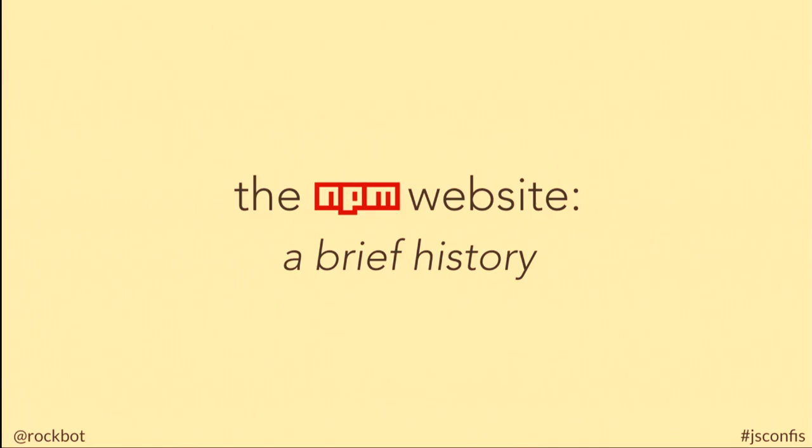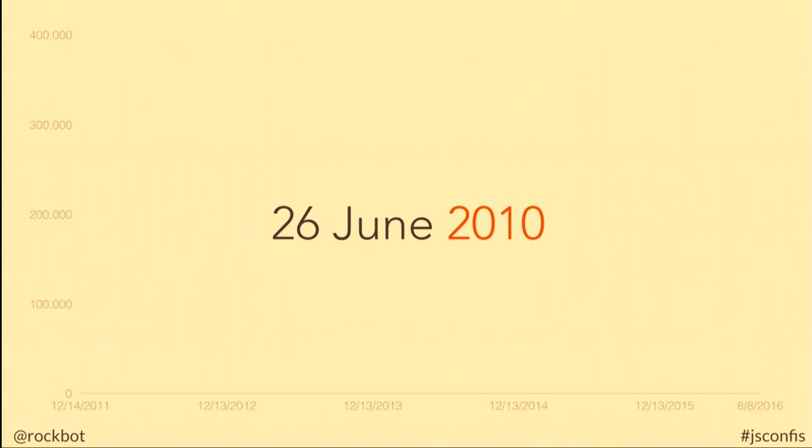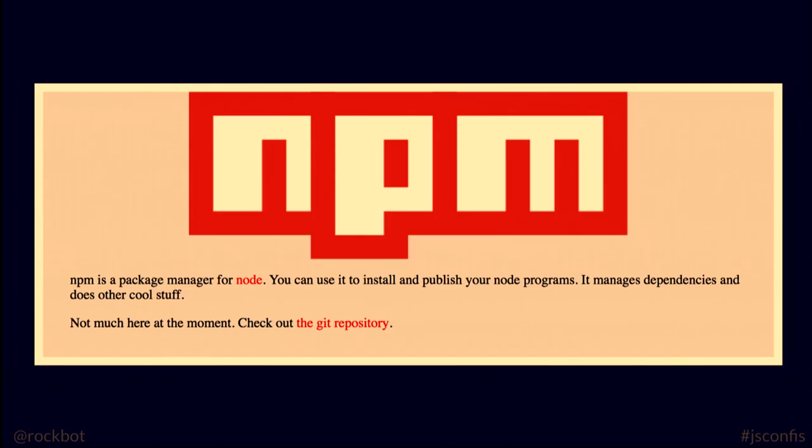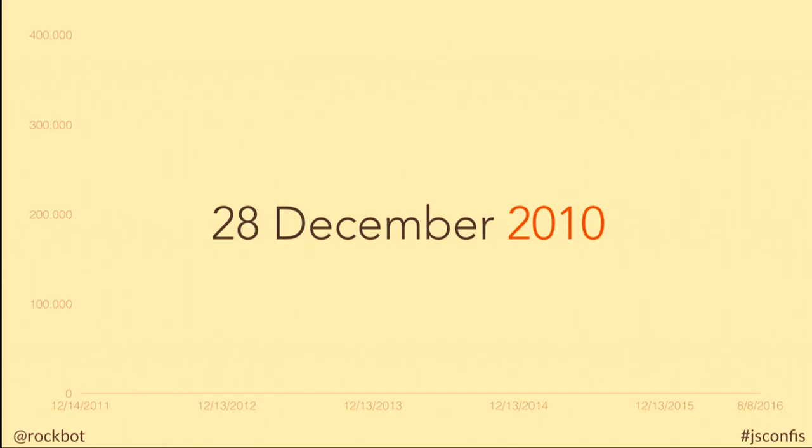Let's go a little bit back in time. The very first version of the NPM website is from June 2010, and here's what it looked like. It was just a little landing page — not much here. It's just like, hey, there's this thing called NPM, go to the GitHub repo, you'll find out more information there.